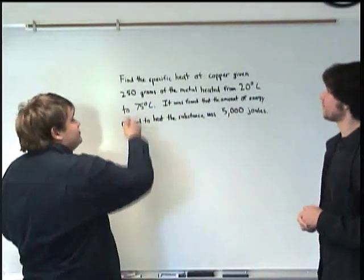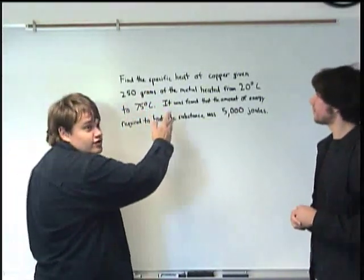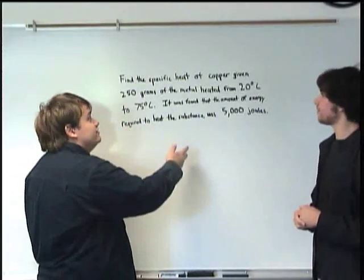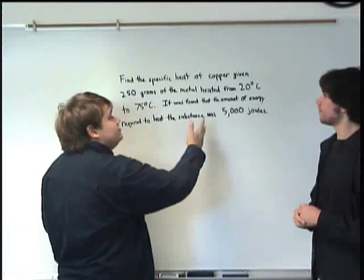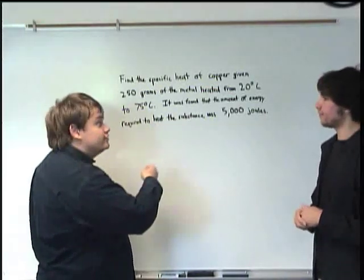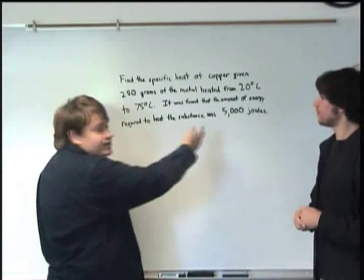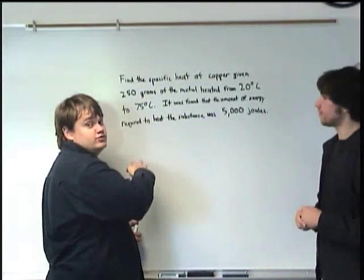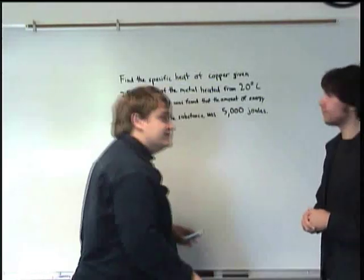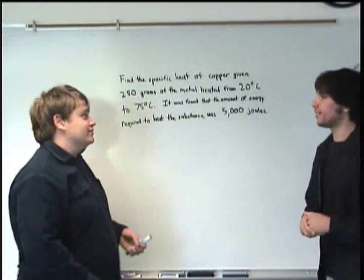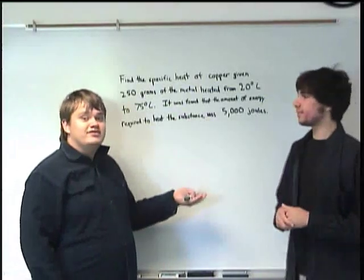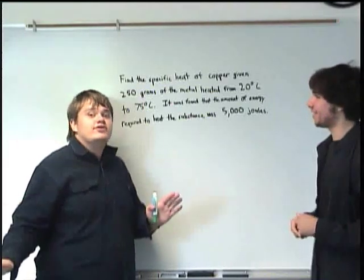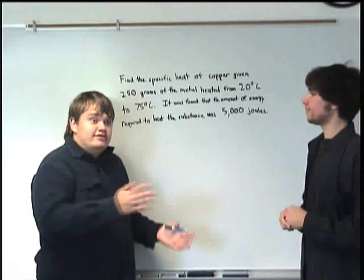Okay, so let's read the problem in case you can't read it on here. It might be hard to see. So, find the specific heat of copper given 250 grams of the metal is heated from 20 degrees to 75 degrees Celsius, of course. And it was found that the amount of energy required to heat the substance from that temperature to the other temperature is 5,000 joules. Okay. Now, of course this is a word problem being the bane of most students' existence. But, not to worry. We can boil it down to something, you know, manageable.